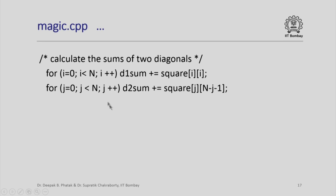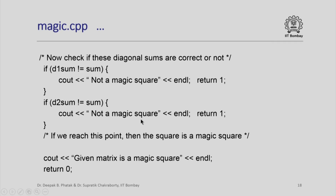By this point, if everything is alright, the rows and columns add up to the required number. But we still have to check the diagonals. Square[i][i] gives elements on one diagonal for different values of i. Square[j][n minus j minus 1] gives the other diagonal. Having found both diagonal sums, I check whether each equals the required sum. If either does not match, it is not a magic square. If I have reached the end with all checks passing, then the square is indeed a magic square.